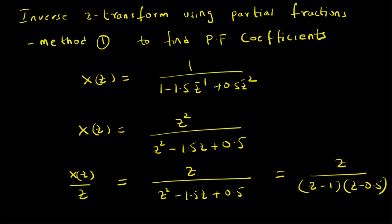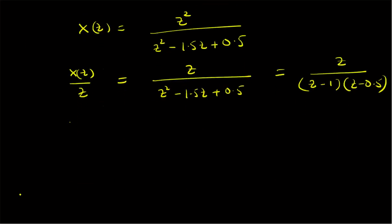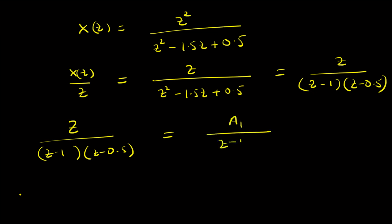Our goal is to find the partial fractions for the rational polynomial z / [(z - 1)(z - 0.5)]. We write the partial fraction expansion as A1/(z - 1) + A2/(z - 0.5). To find the values of A1 and A2, we use Method 1, which is the comparison of coefficients on both sides.